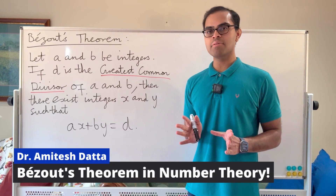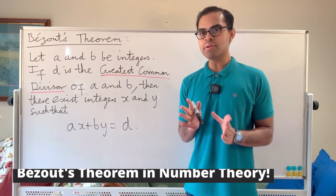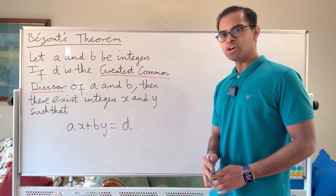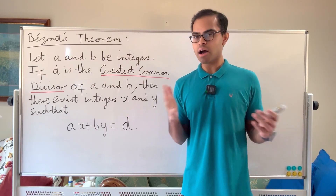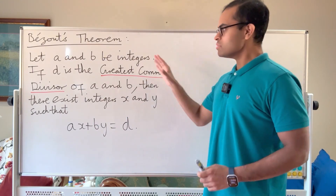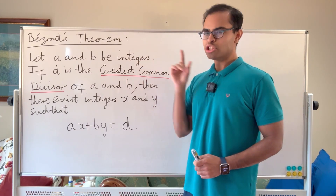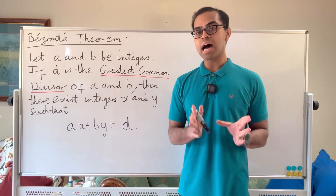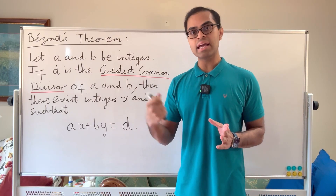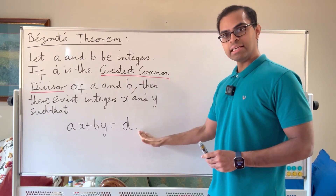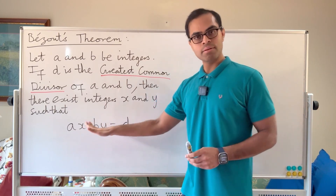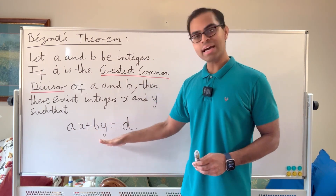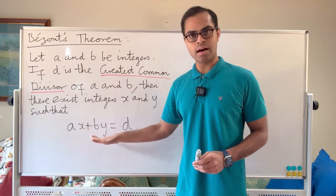Bézout's theorem is a very important theorem in number theory that underpins so many results, but many people don't learn it. In this video I'm going to explain it super intuitively so you really master it by the end of this 10-minute video. So Bézout's theorem tells us: let a and b be integers. If d is the greatest common divisor of a and b — that is, the largest integer that goes into both a and b — then we can write d as ax plus by, where x and y are integers.